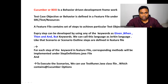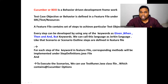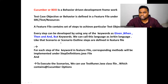Every step in a feature file is developed using any of the keywords: Given, When, Then, and But. We call this language Gherkin language. Scenario and Scenario Outline steps are defined in the feature file.